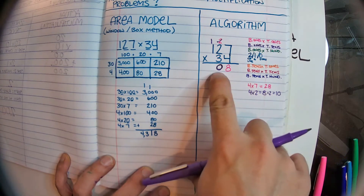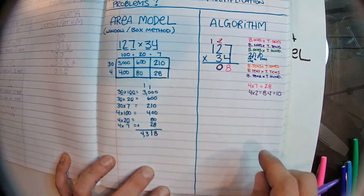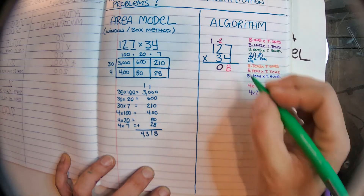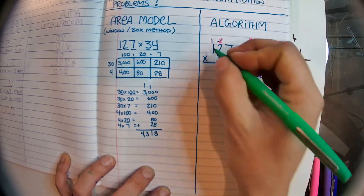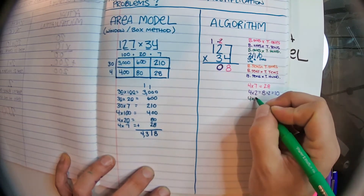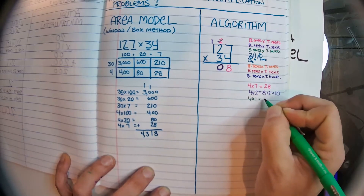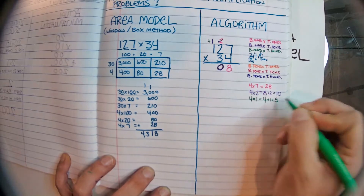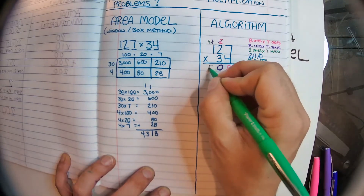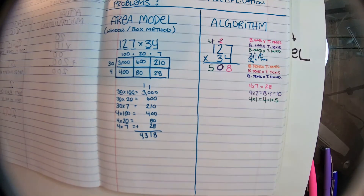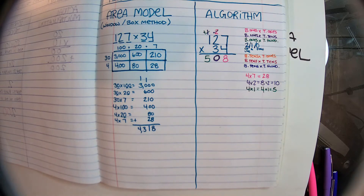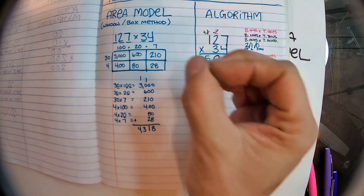To finish the top row, we do bottom ones times top hundreds: four times one is four, then we add the one we carried, so we actually get five. My first line reads 508.